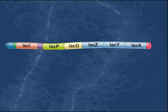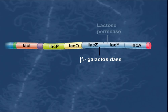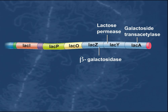These were determined to be the LAC-Z gene that codes for the enzyme beta-galactosidase, the LAC-Y gene that codes for a lactose permease, and the LAC-A gene that codes for the enzyme galactoside transacetylase.